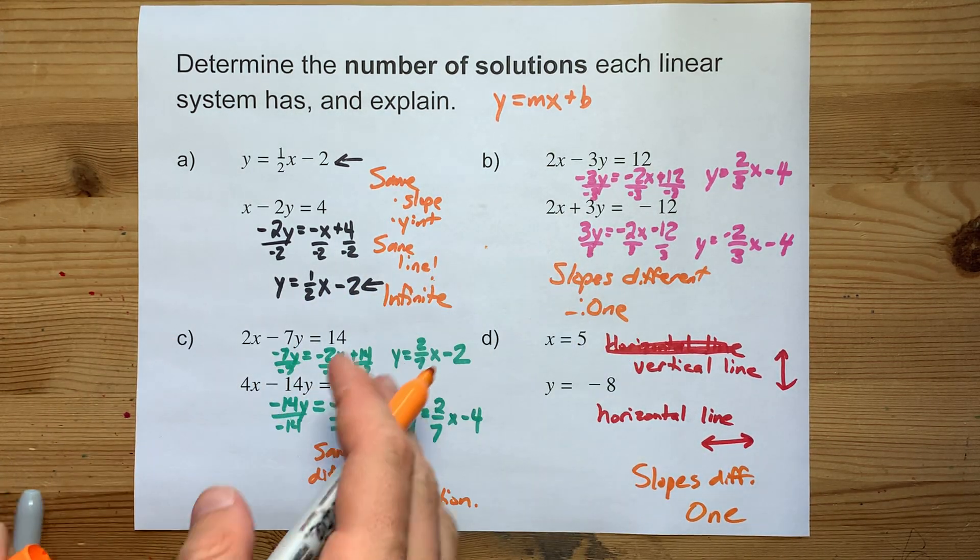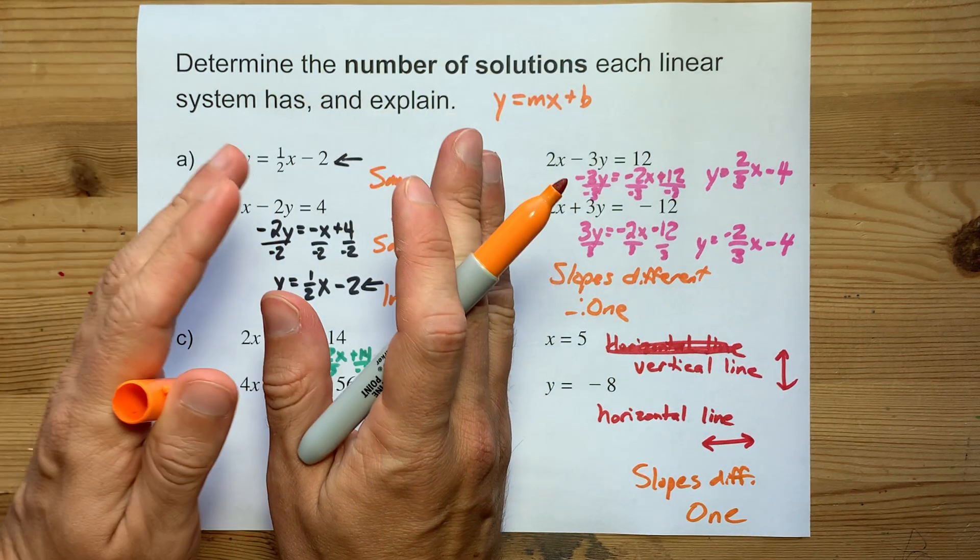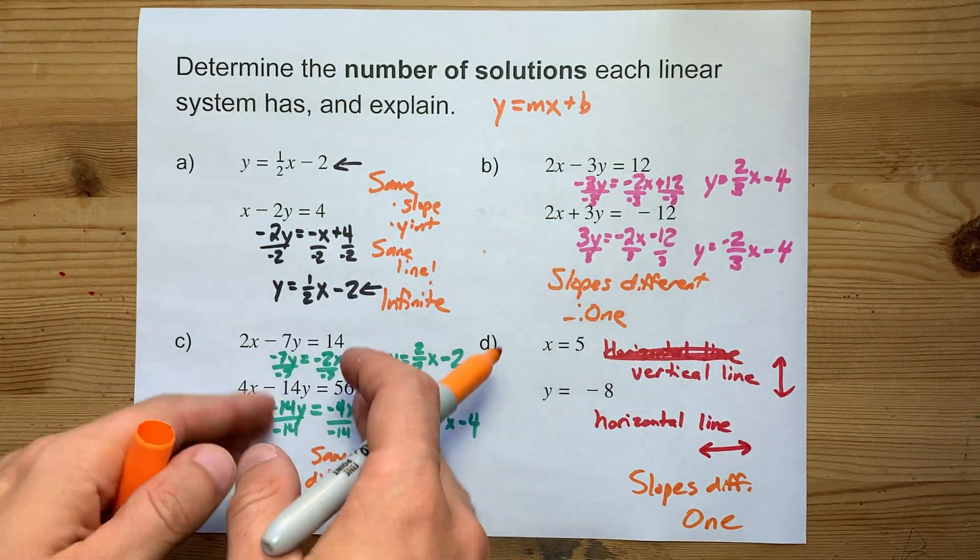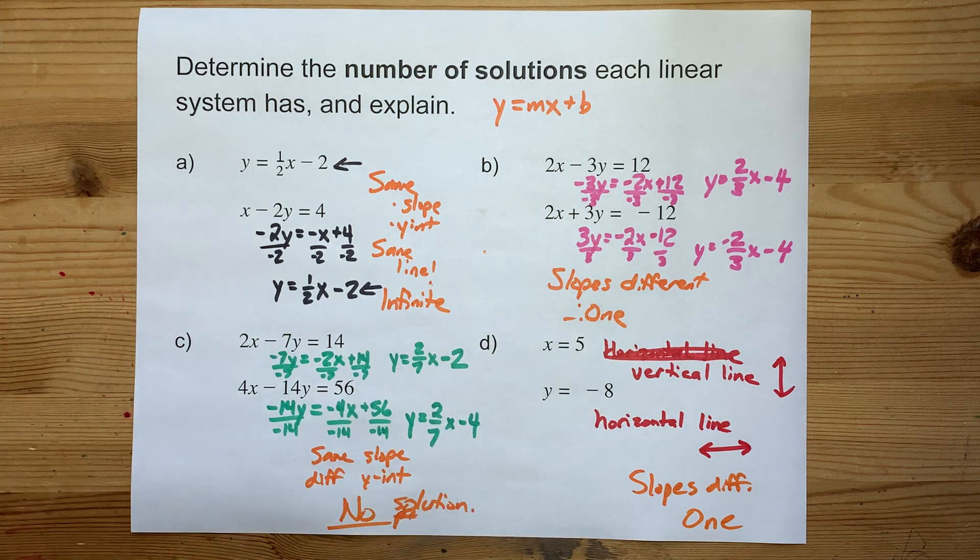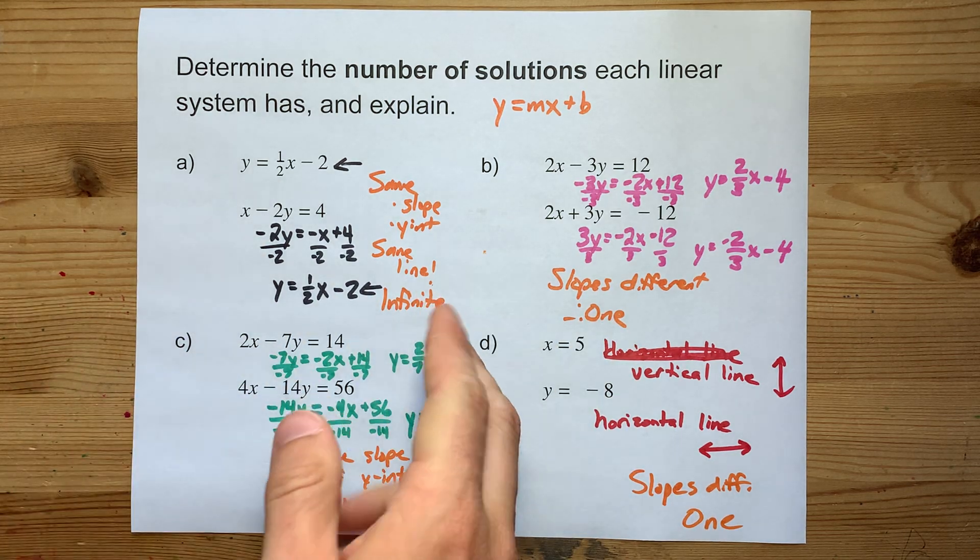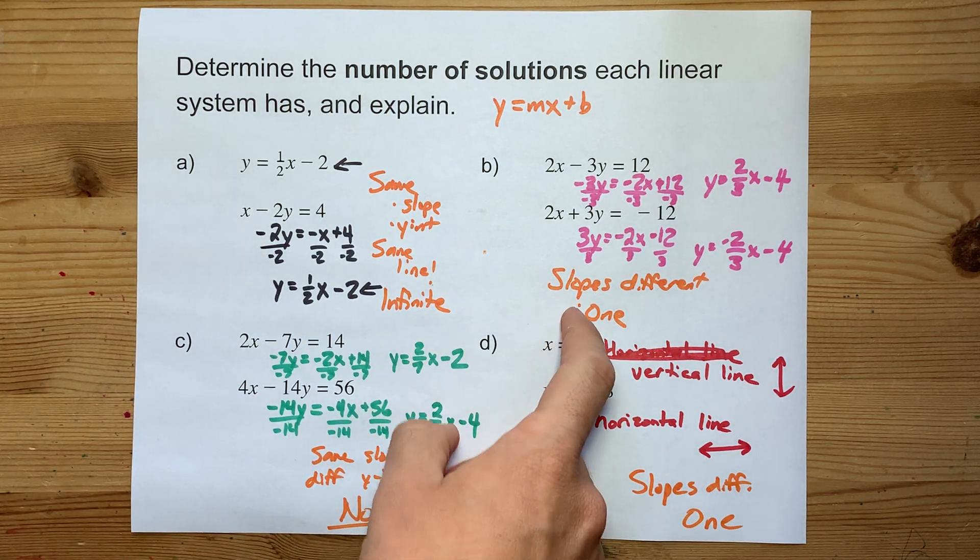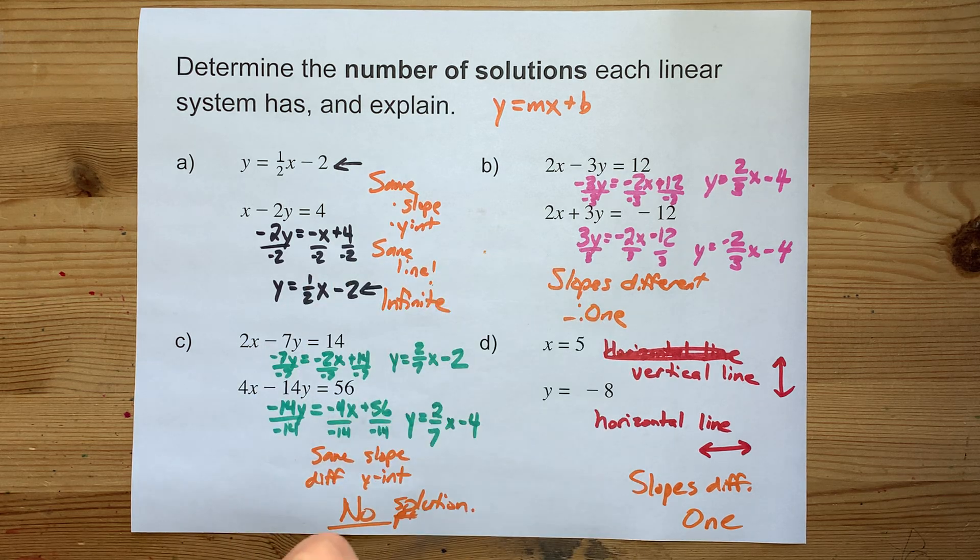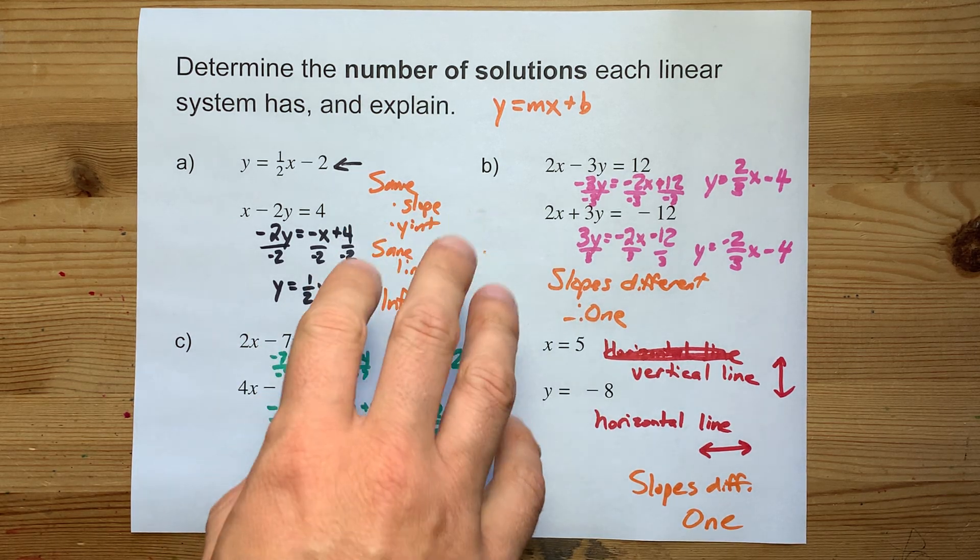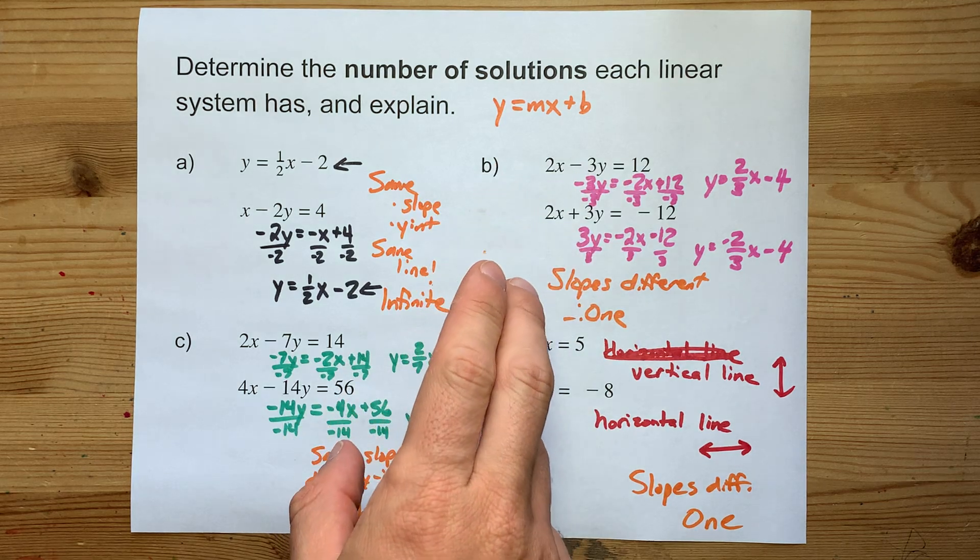Let me reiterate. Figure out the slope and y-intercept for both of the lines that you're given. If the slopes are different, there's one solution to the system. If the slopes are the same, you have to look at the y-intercepts.